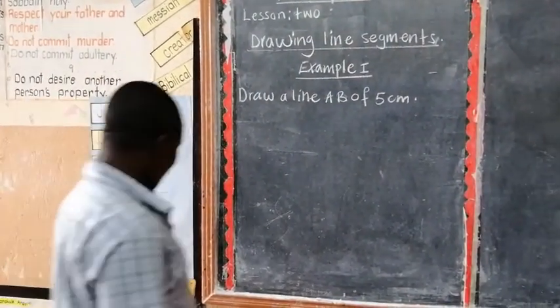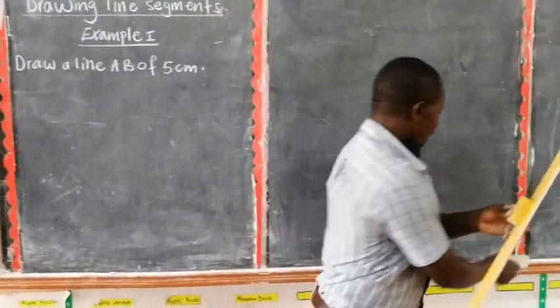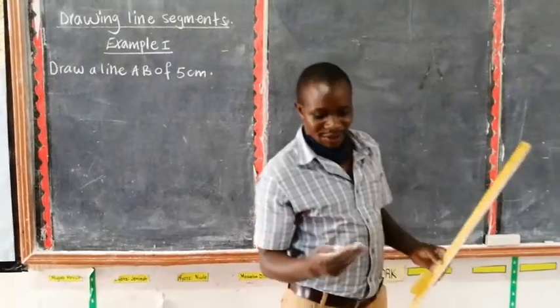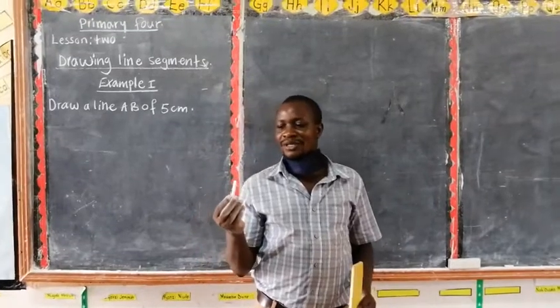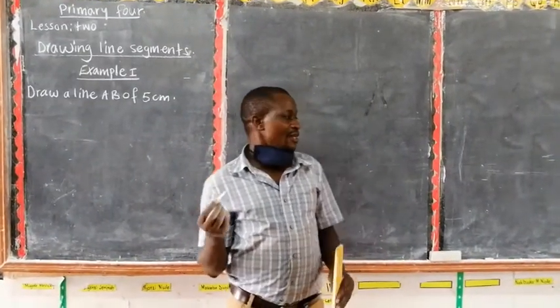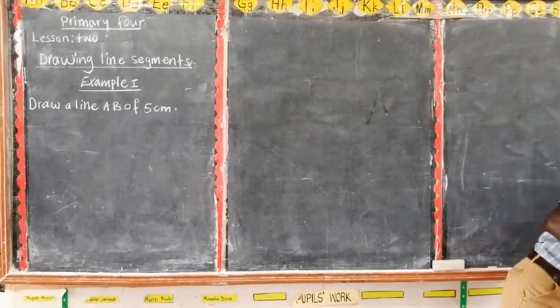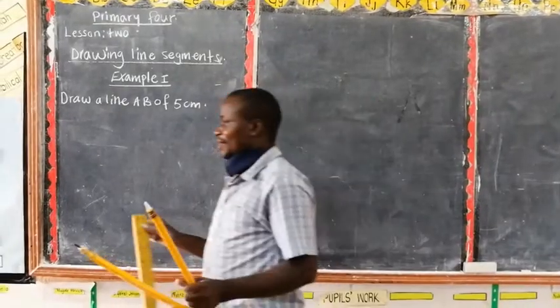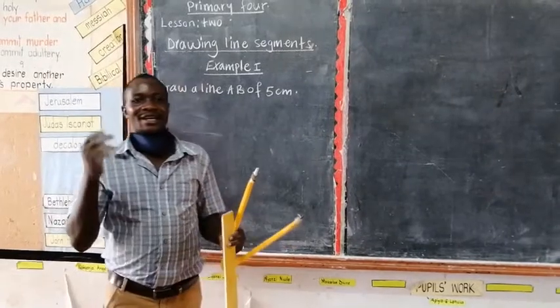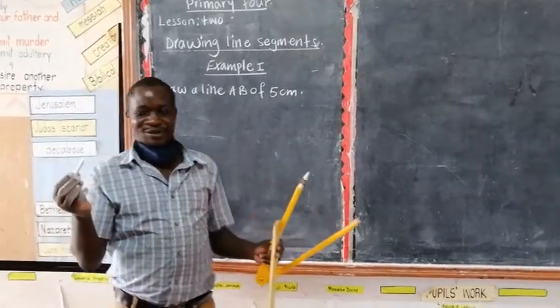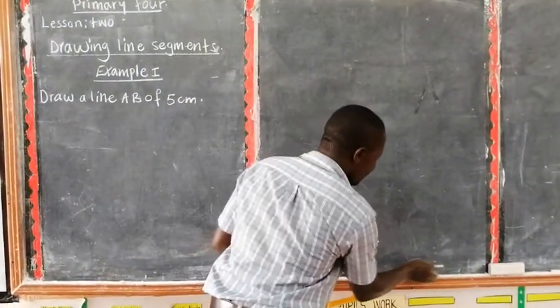When we are drawing lines we must have a ruler, a pencil, and your pencil should be well sharpened. You must also have a pair of compasses. So get your ruler, your pair of compass and a pencil, but for me I am using a piece of chalk.